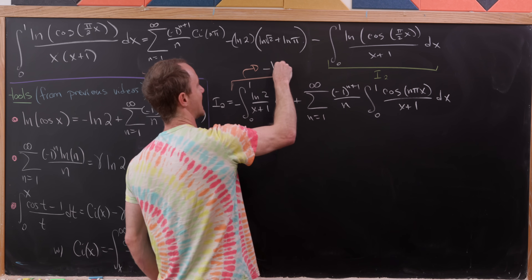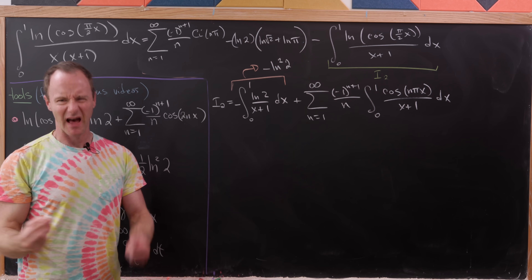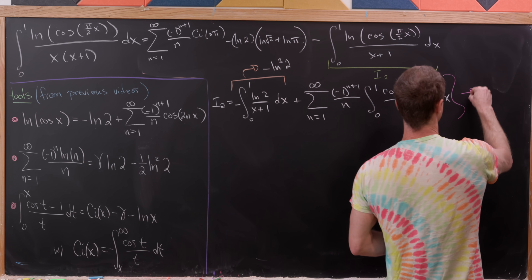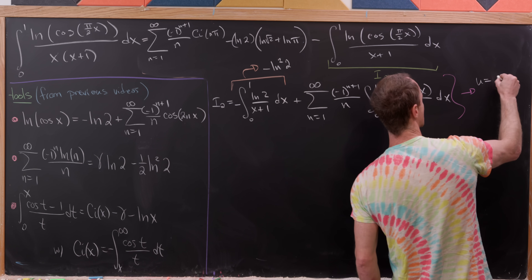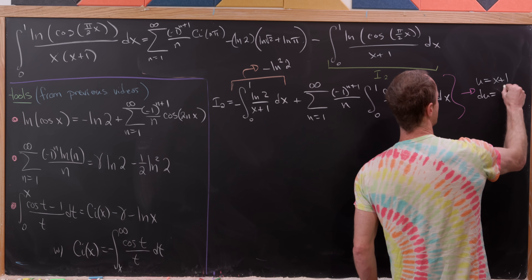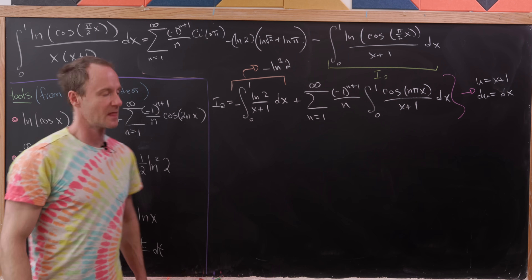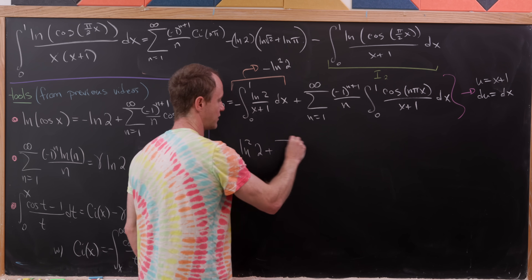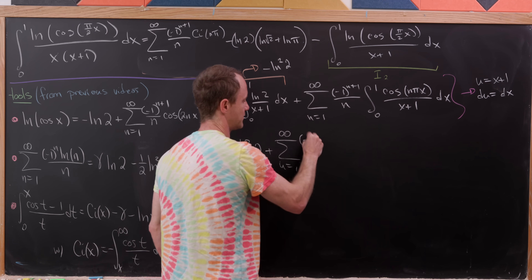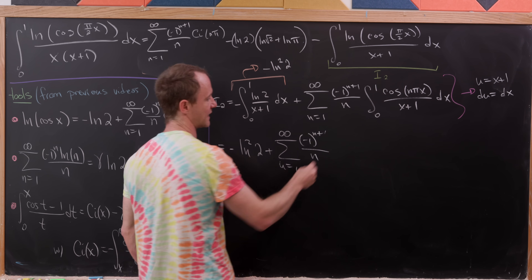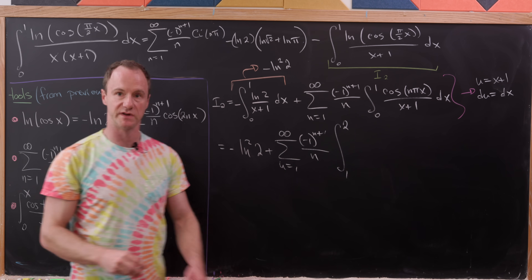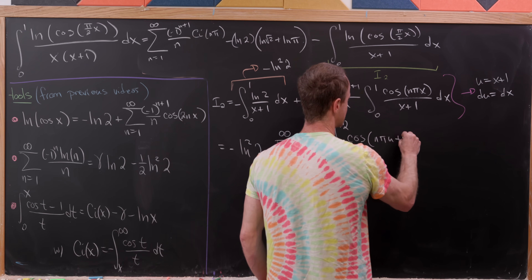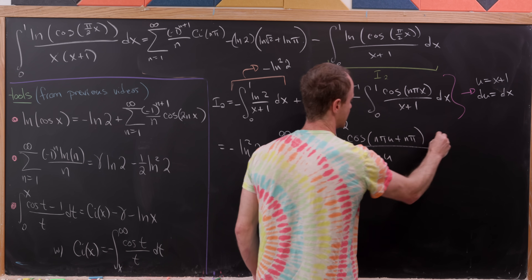For the cosine integrals in I₂ we substitute u = x + 1, so du = dx and the limits shift from [0,1] to [1,2]. The integrand becomes cos(nπ(u−1))/u = cos(nπu − nπ)/u. We are left with −ln²(2) plus the sum of (−1)^(n+1)/n times the integral from 1 to 2 of cos(nπu − nπ)/u du.